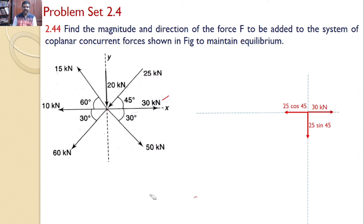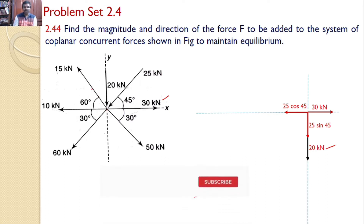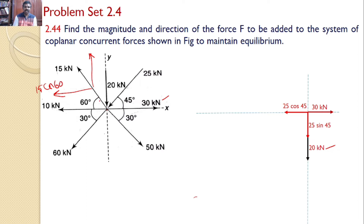Next, the 20 kN force acts along the y-axis in the downward direction, so it can be placed directly — there is no x-component. Next, the 15 kN force makes an angle of 60° with the horizontal. Resolving it: the x-axis component is 15 cos 60° and the vertical component is 15 sin 60°.